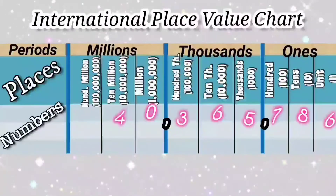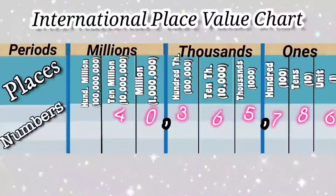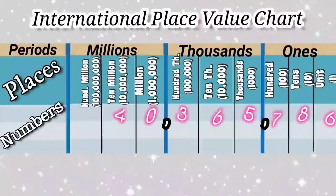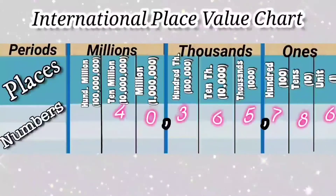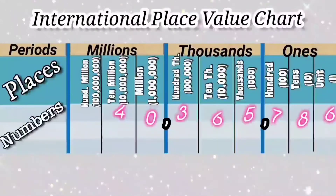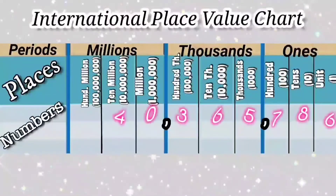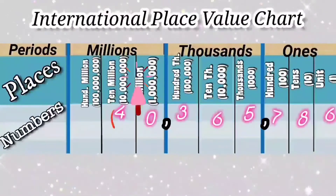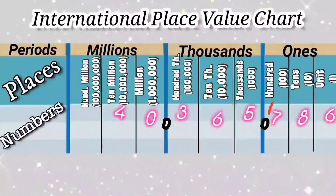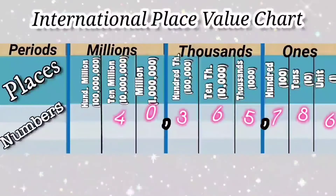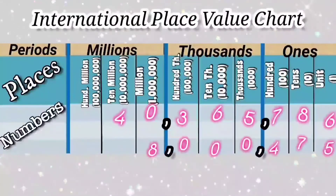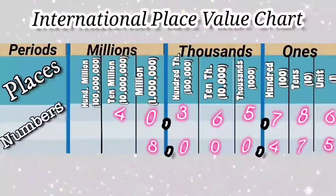Look at the first example on the board. We write the number in the standard form as 40,365,786 and read it as forty million, three hundred sixty-five thousand, seven hundred eighty-six. We read the second number on the board as 8,475.